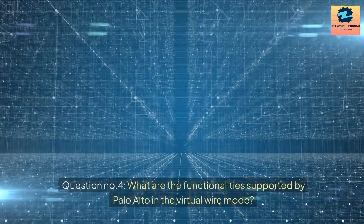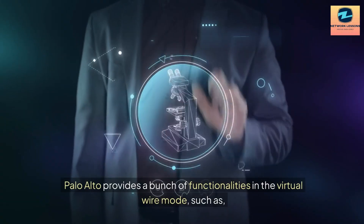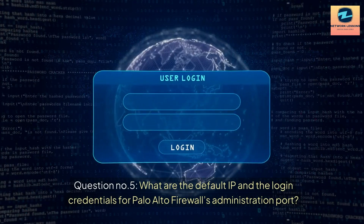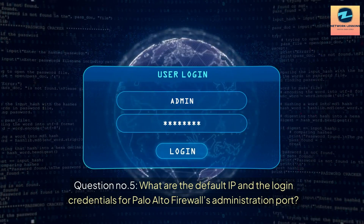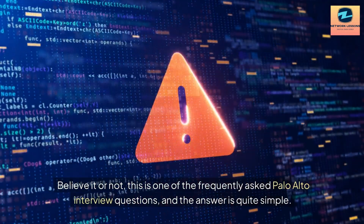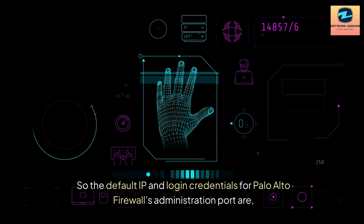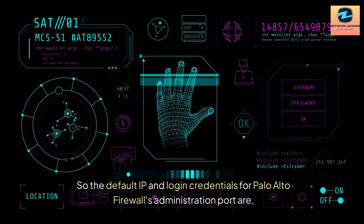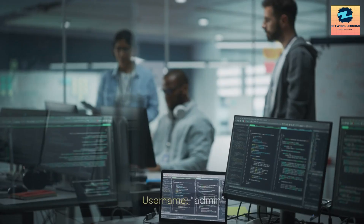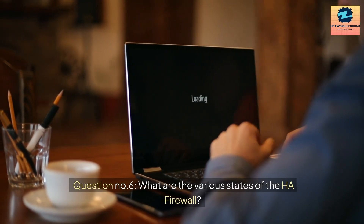Question number four: What are the functionalities supported by Palo Alto in the virtual wire mode? Palo Alto provides a range of functionalities in virtual wire mode, such as NAT, App ID, decryption, User ID, and Content ID. Question number five: What are the default IP and login credentials for Palo Alto firewalls administration port? The default IP and login credentials are: Default IP - 192.168.1.1, Username - admin, Password - admin.